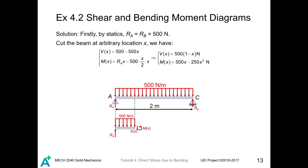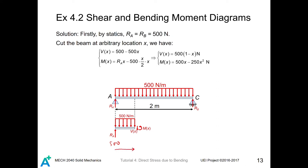The beam length is 2 meters and it has a distributed load of 500 newton per meter. Firstly, we find all we know from statics: Ra equals Rb equals 500 newtons, since it is a distributed load across the whole length. Now we cut the beam at an arbitrary location x, and consider the forces on this tiny section. Ra equals 500 newtons, and there is a distributed load of 500 newton per meter over length x. We find the equation of shear force and moment on this end using our sign convention.